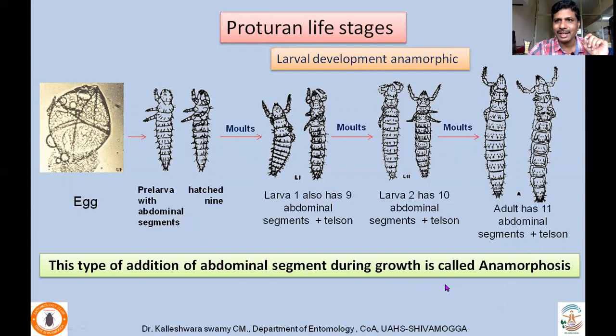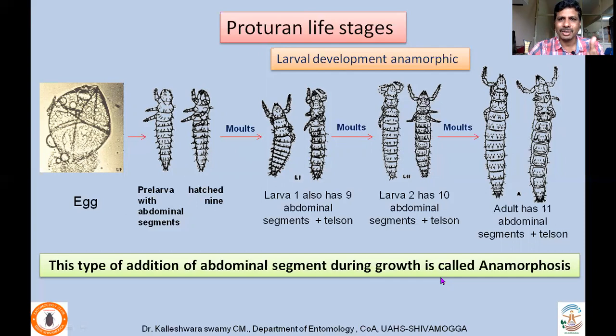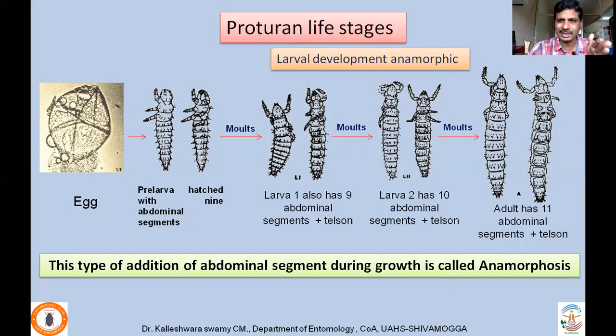All other insects except proturans do not have this addition of abdominal segments during growth and development — that condition is called epimorphosis. So anamorphosis means addition of abdominal segments during growth and development, whereas epimorphosis means there will be no addition of abdominal segments. Only Protura undergo anamorphosis; all other insect orders undergo epimorphosis.